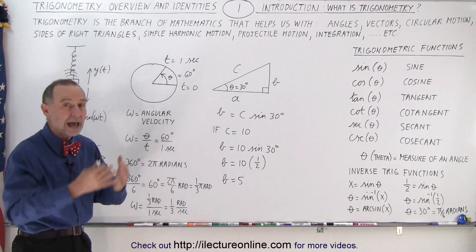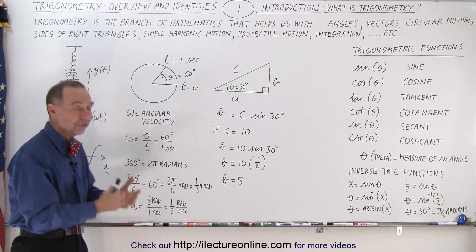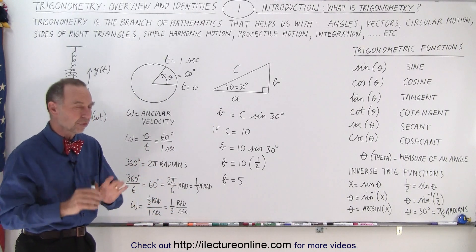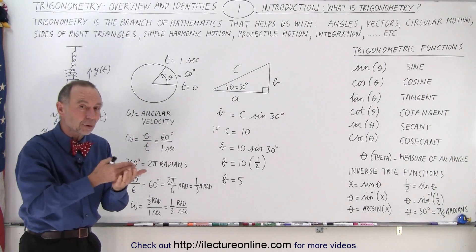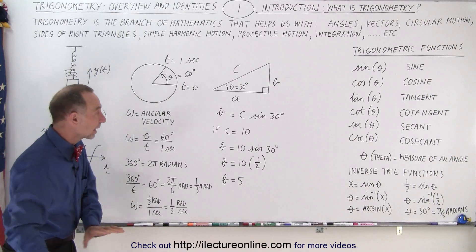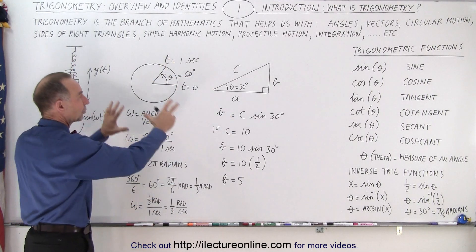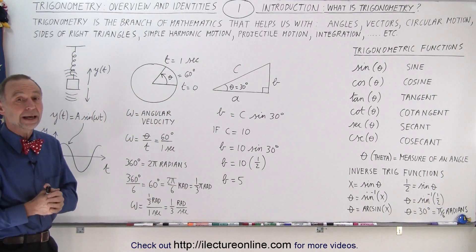Then we have all kinds of other useful identities that allow us to utilize trigonometry in all kinds of conditions for double angles, half angles, sum of angles, difference of angles. We're going to show you how to manipulate these functions so we can find all these useful identities that can be used for various branches of mathematics and physics.